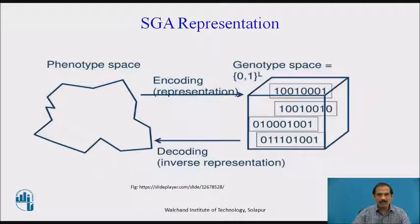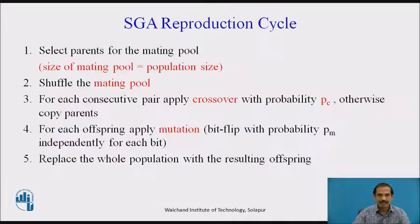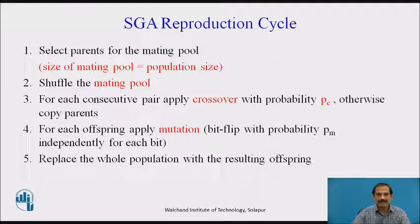For a simple genetic algorithm, a phenotype is encoded and produced as binary strings in the genome space. The simple genetic algorithm reproduction cycle proceeds as follows: first, we select parents from the mating pool, which is a set of chromosomes of a given population size. We shuffle the mating pool and for each consecutive pair, apply crossover with probability pc, otherwise copy the parents directly. For each offspring, apply mutation with probability pm, which is a bit flip independent for each bit. Then replace the whole population with the resulting offspring.